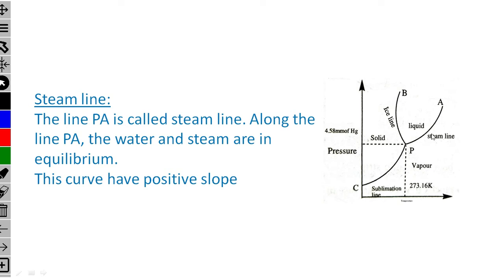The second line is the steam line. The line PA is called the steam line. Along the line PA, the water and steam are in equilibrium — it is the boundary between liquid and steam. This curve has a positive slope, meaning as temperature increases, pressure also increases in the upward direction. Both axes increase together, so it is a positive slope.